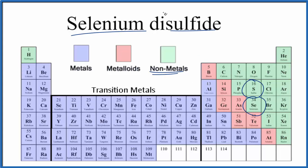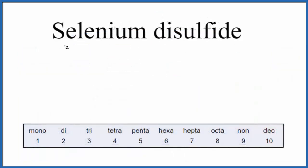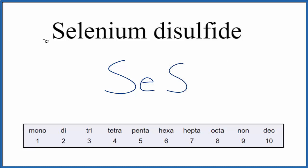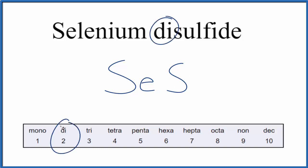With that, we need to take into account the prefix when we write the formula for selenium disulfide. The element symbol for selenium is Se, and sulfide comes from sulfur, so we put S. For selenium, there's nothing written in front of the first element if there's only one — so there's one selenium and we just don't write the one. For sulfide, there's a 'di' prefix, and 'di' means two, so we put a subscript 2. That makes the formula for selenium disulfide SeS₂.